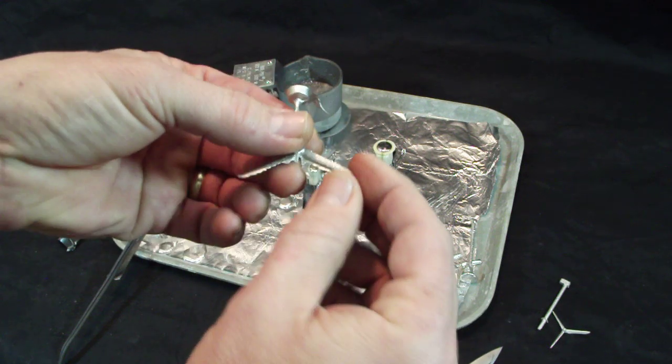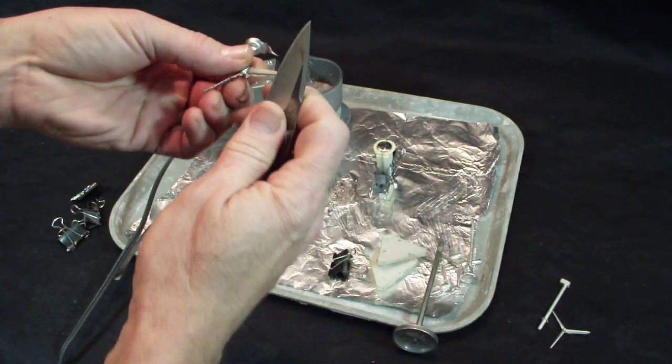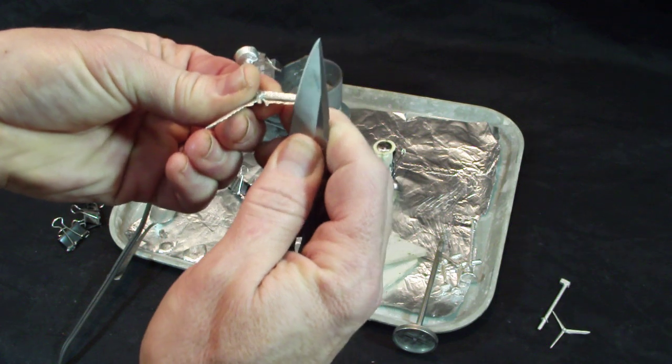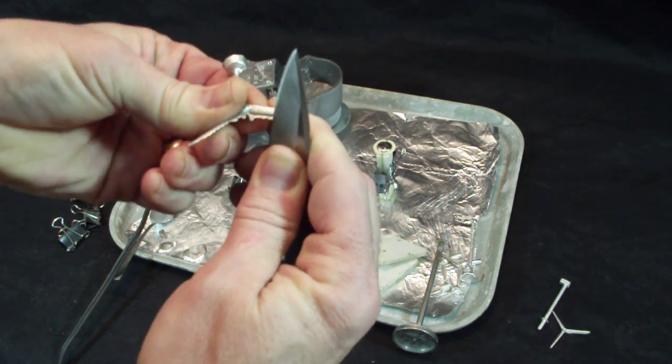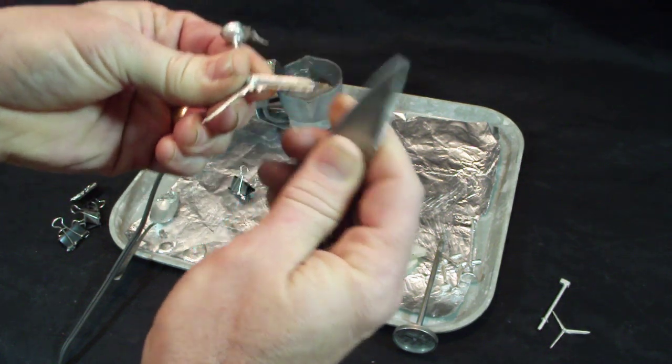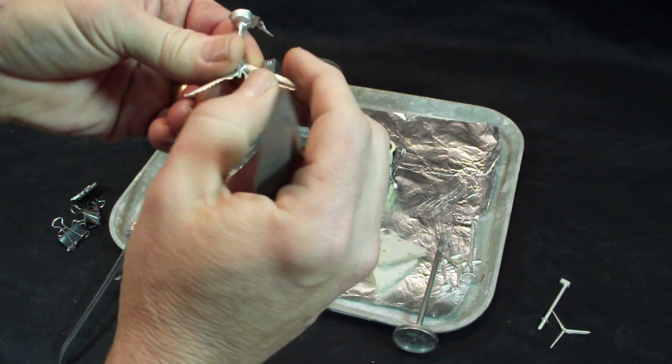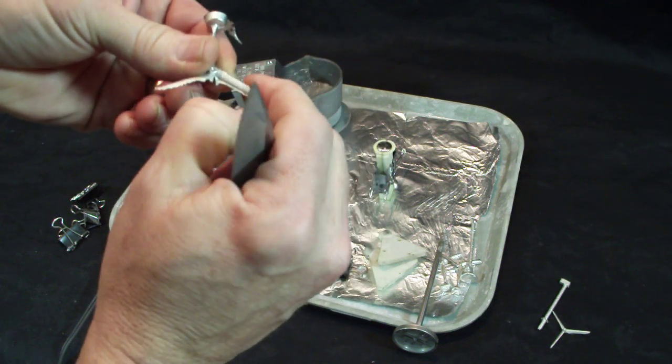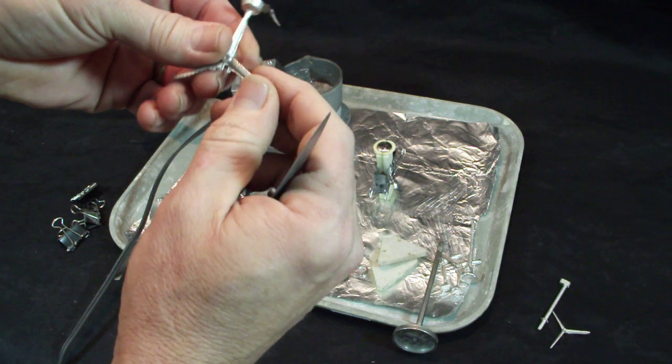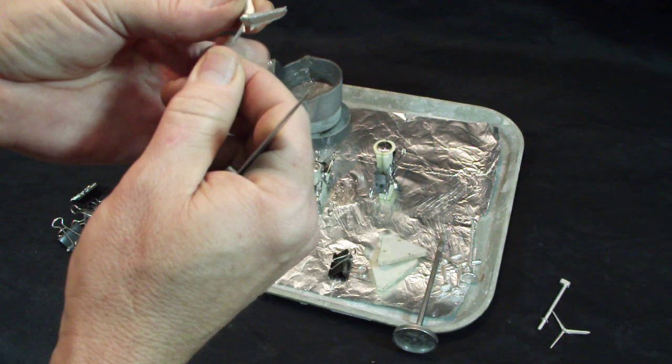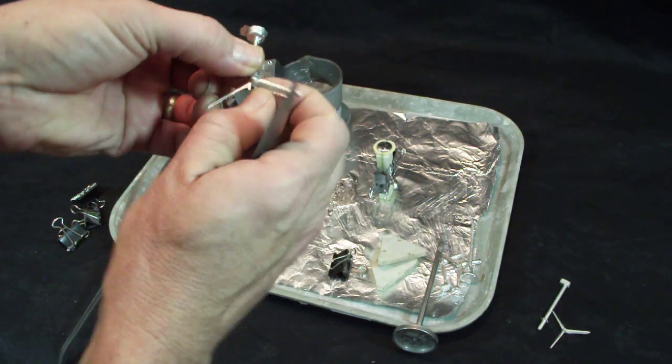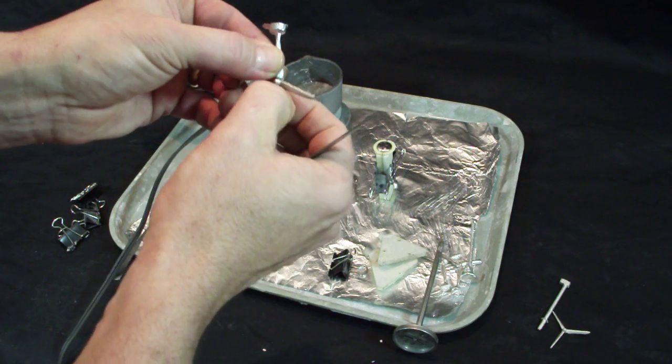And then all we have to do is come in. And either with a knife, there's probably better tools than this. But you can come in and shave off the flashing. Or grinding with a Dremel tool actually works much better. Shave off the flashing from the outside of the part.